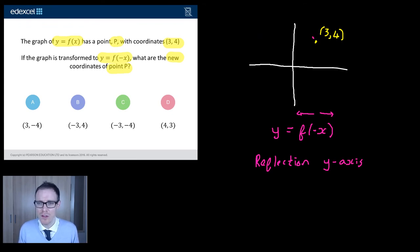So, if it used to be at (3, 4), it's going to go across here with my y-axis being my line of symmetry. And what's the new equation of that point? Because you could get all that bit right, but still mess this bit up.